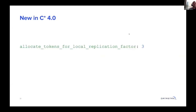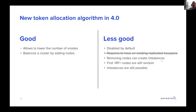In Cassandra 4, there's going to be an improvement: you don't have to specify a keyspace. You just need to specify a replication factor for which you want the balance to be improved. So that removes the requirement to have an existing replicated keyspace — one less thing to worry about.